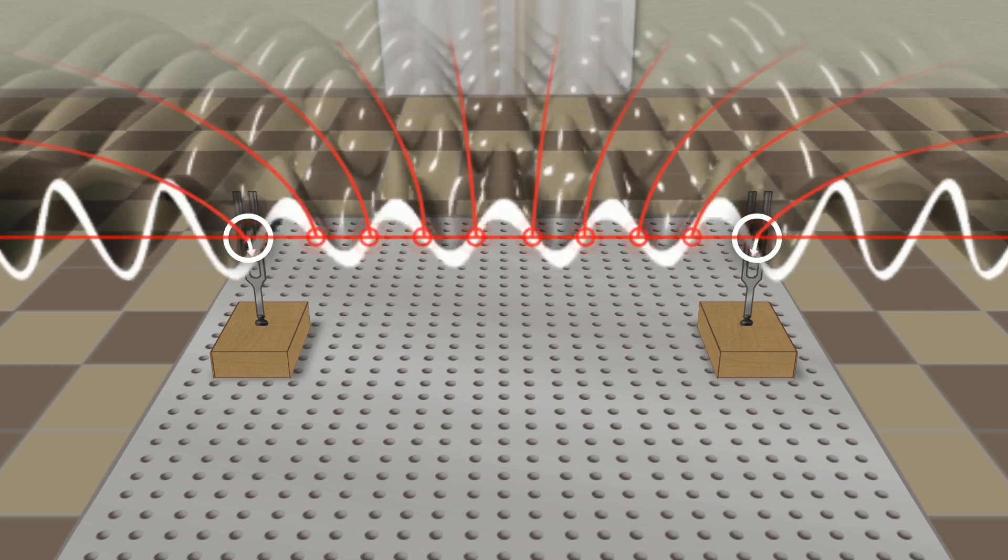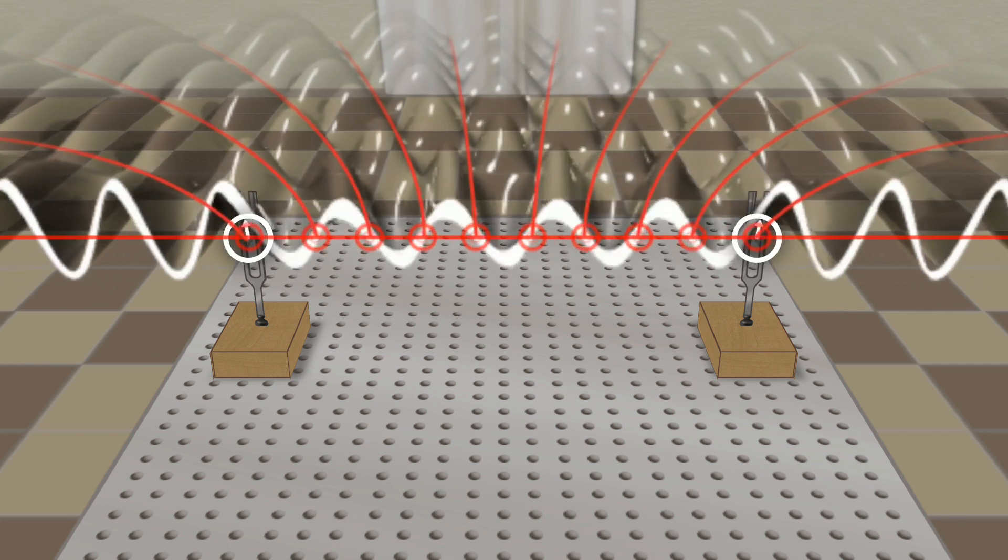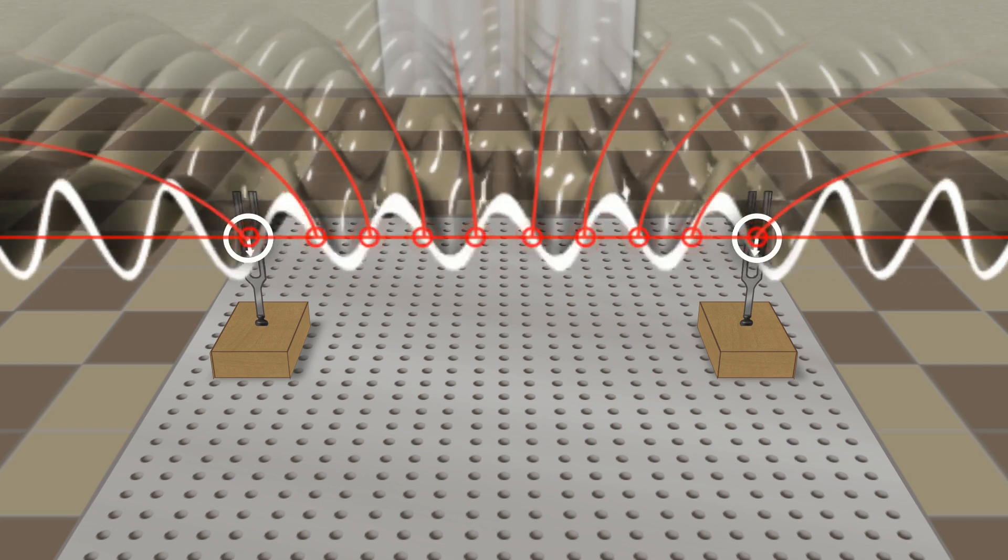Anti-nodes, where both sound waves reach maximum amplitude, form midway between the nodes.